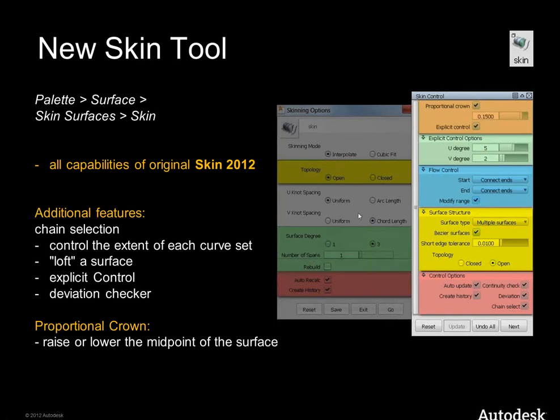Comparing the old and new option boxes: the old version had surface degree limited to only 1 and 3, not much choice. In the new box you have all the controls you need — complete explicit control. It's Class A capable: flow control, Bezier forcing options, continuity check, chain select. It's just a modern up-to-date tool now.